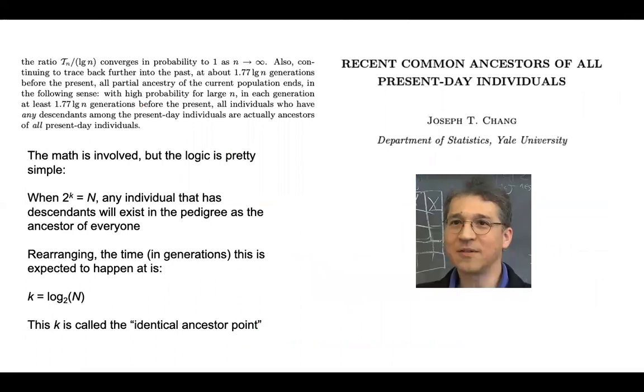Let's get into when this was derived and how the math works out. This paper was by Joseph Chang, titled Recent Common Ancestor of All Present-Day Individuals. He notes that at about 1.77 log N generations before the present, where N is the population size, all individuals who have any descendants among the present-day individuals are actually ancestors of all present-day individuals.